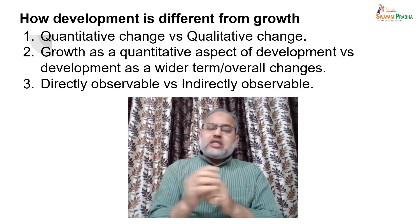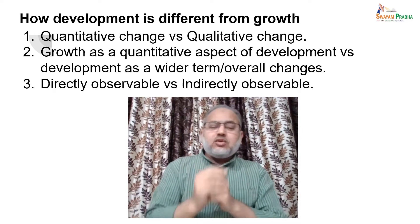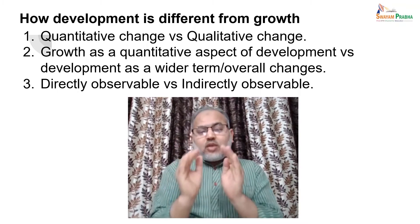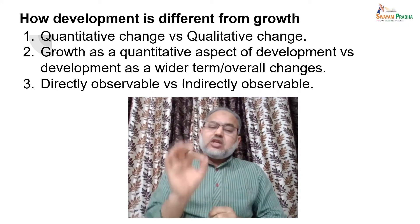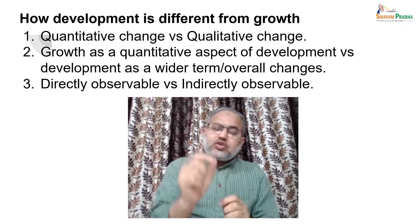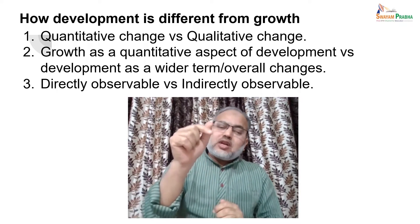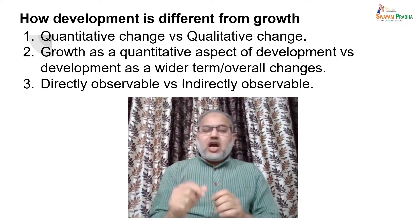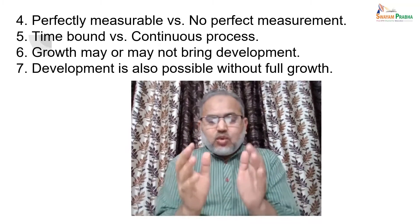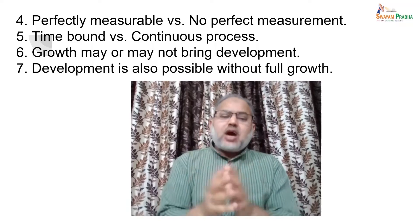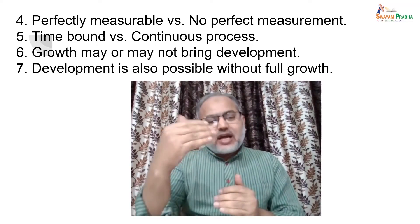Whereas development is indirectly observable. You cannot directly observe development — for example, you cannot directly observe the ability of an individual to write. You will have to ask the child to write something, and only then can you observe whether the learner is able to write or not. The functional part cannot be observed directly; it is observed through an indirect process.